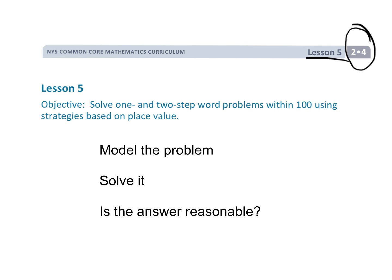This is second grade module 4 lesson 5 and we're going to be using tape diagrams largely to solve word problems. It's a three-step process. Number one, we're going to model the problem, and the point of modeling is to help students understand what the problem is about — what it's asking them to do — rather than the traditional approach where students just look at the numbers and arbitrarily add, subtract, or multiply them.